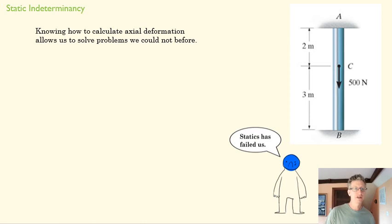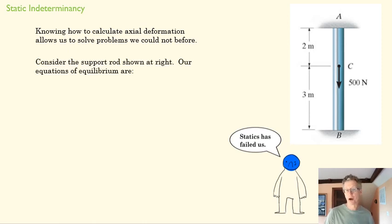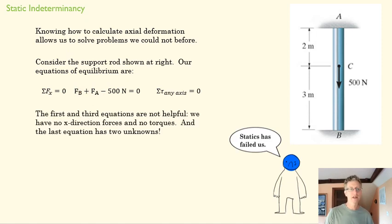If we start to deal with this as if we were doing a statics problem to find our internal resultant loads, what we'd find is the X equation doesn't matter. The moment equation doesn't tell us anything. And we end up with this equation here in the Y direction, which has two unknowns, a support force at A and a support force at B, but only one equation. And so we're stuck. We don't know what to do.